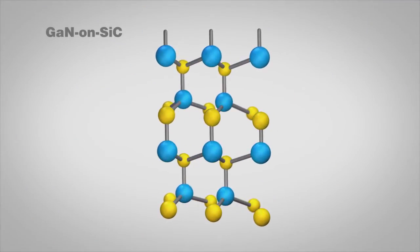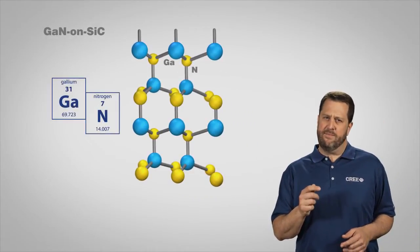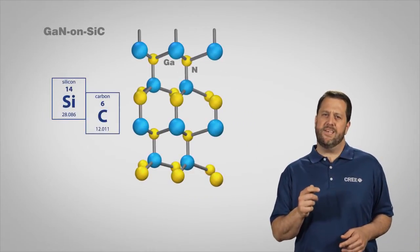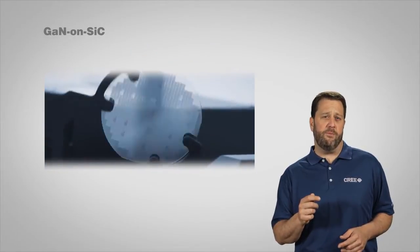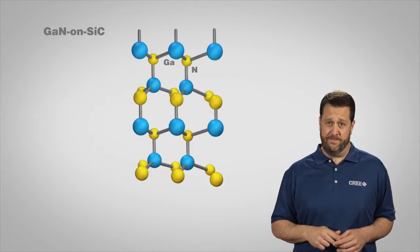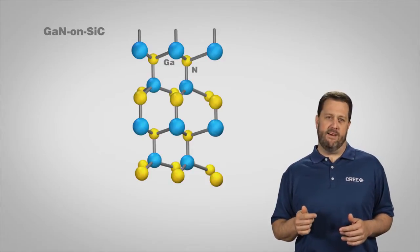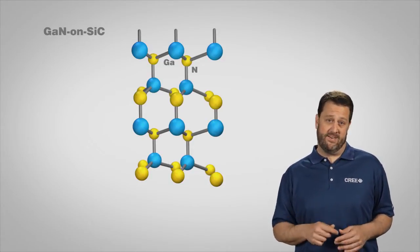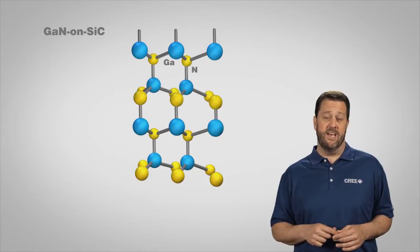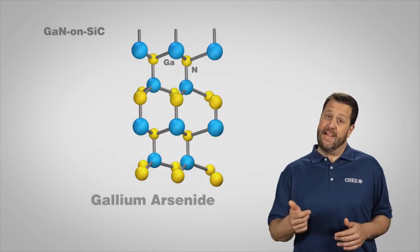So, what is GaN semiconductor technology? Transistors and MMICs fabricated using gallium nitride on silicon carbide substrates provide revolutionary performance to our wireless infrastructure. GaN on SiC is a wide bandgap material which delivers performance improvements over incumbent semiconductor technologies like silicon, silicon germanium, and gallium arsenide.